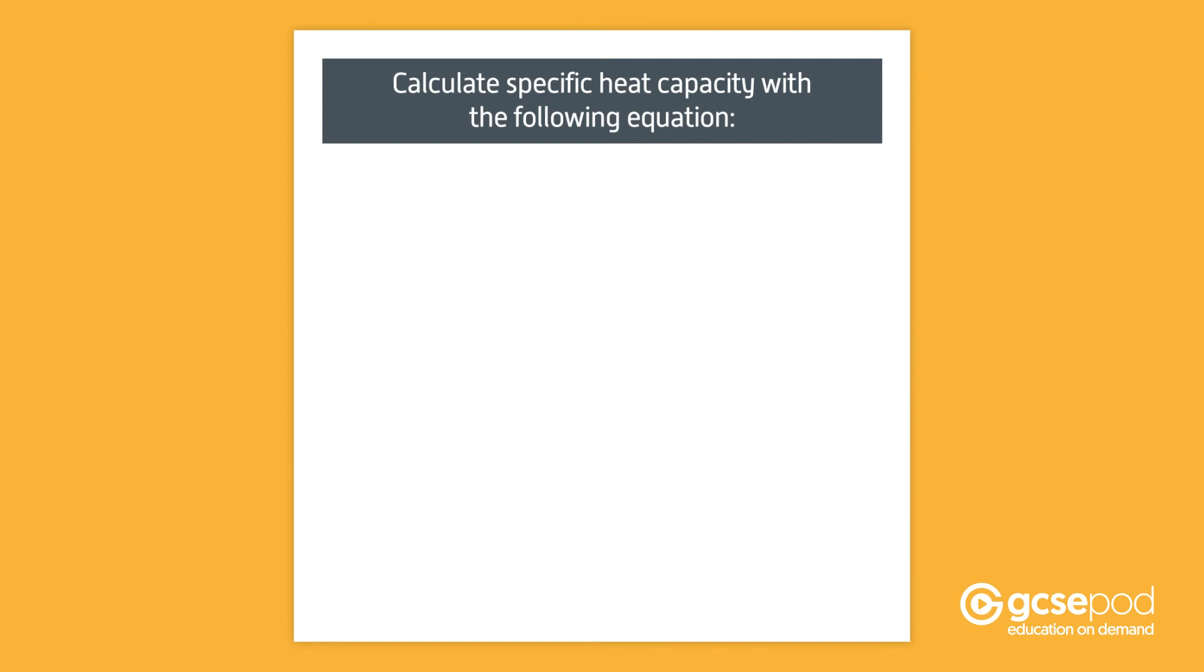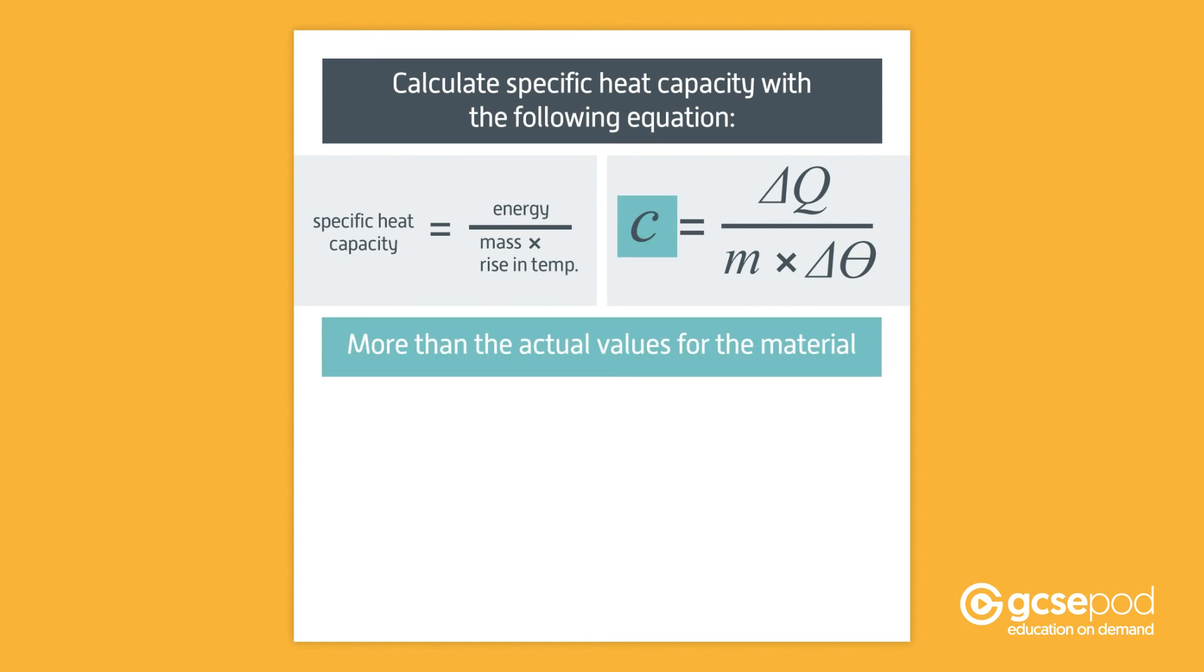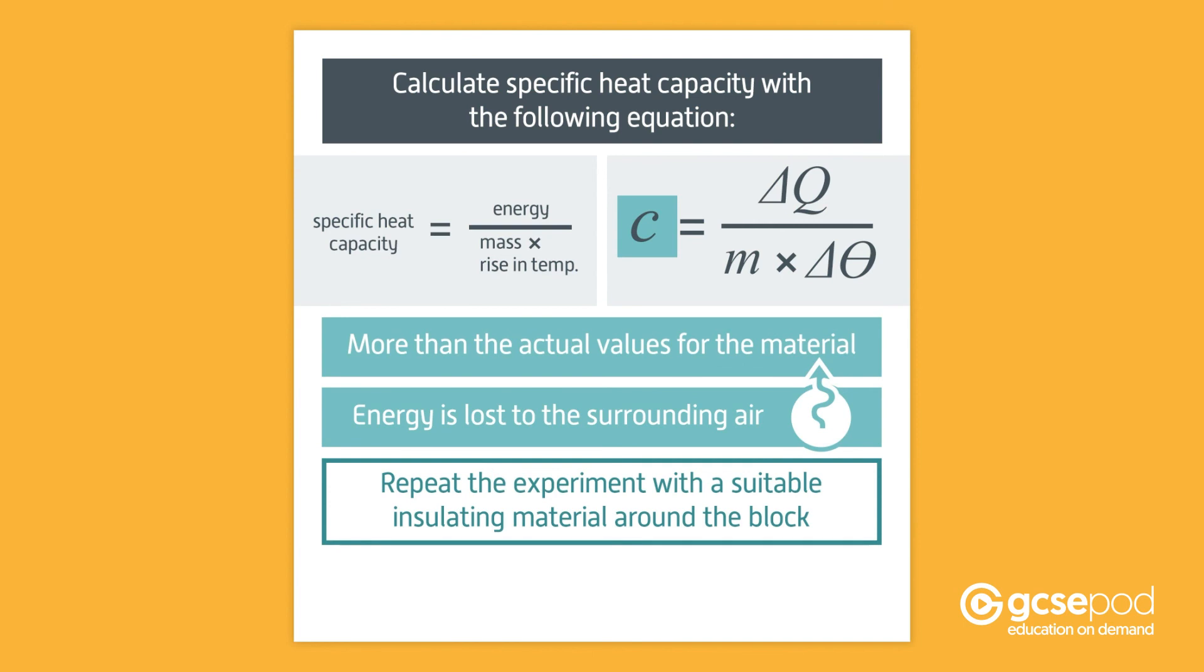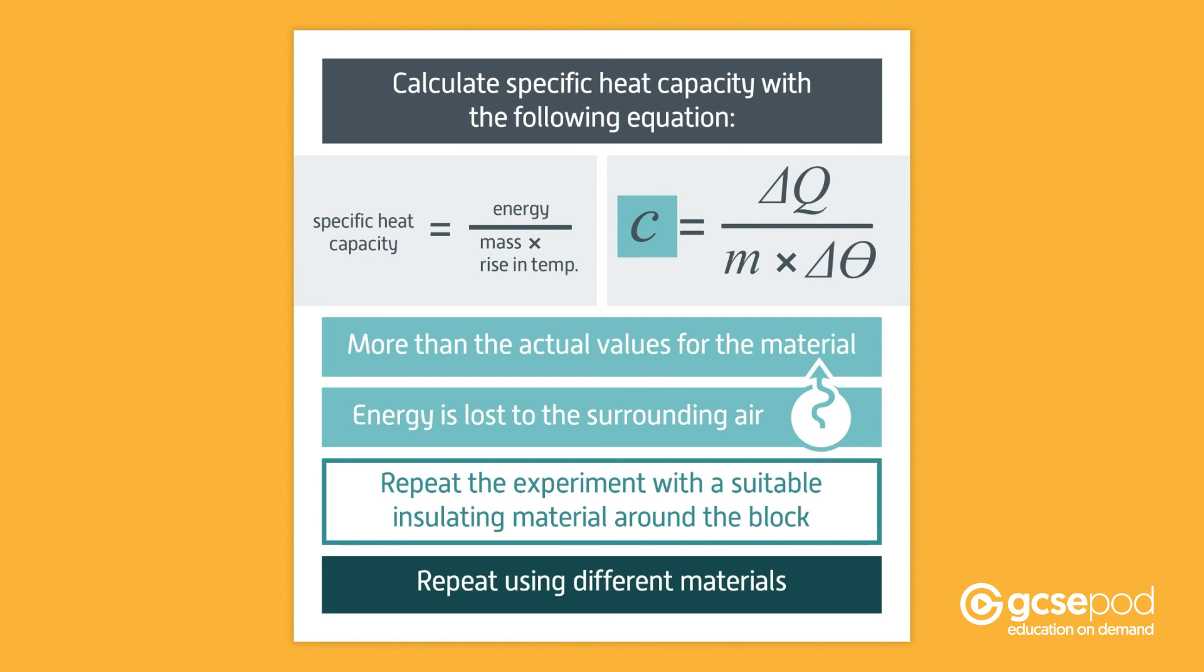Now that you know the energy supplied to the block, you can calculate the specific heat capacity of the material using the following equation. Specific heat capacity equals energy divided by mass multiplied by the rise in temperature. You will probably find your calculated values for C more than the actual values for the materials used. This is because some of the energy supplied will have been lost to the surrounding air. To address this, you could repeat the experiment using a suitable insulating material around the blocks. You can also carry out the experiment using blocks made from different materials.